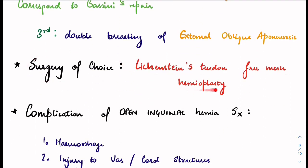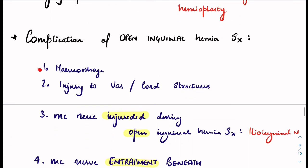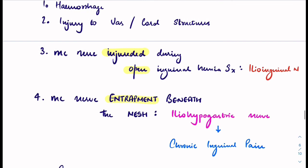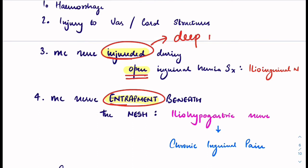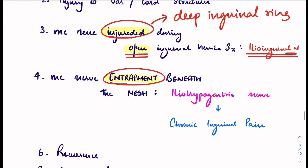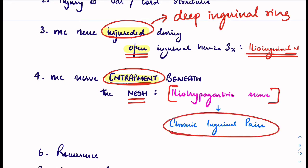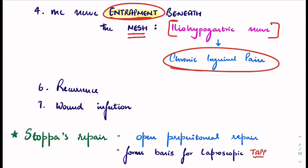Complications of open inguinal hernia surgery include hemorrhage and injury to the vas deferens or cord structures. The most common nerve injured during open surgery is the ilioinguinal nerve — injured when opening the deep inguinal ring. The most common nerve entrapped beneath the mesh is the iliohypogastric nerve, causing chronic inguinal pain. Other complications include recurrence and wound infection.